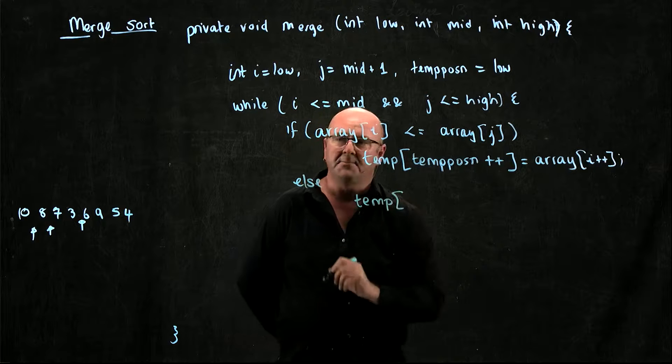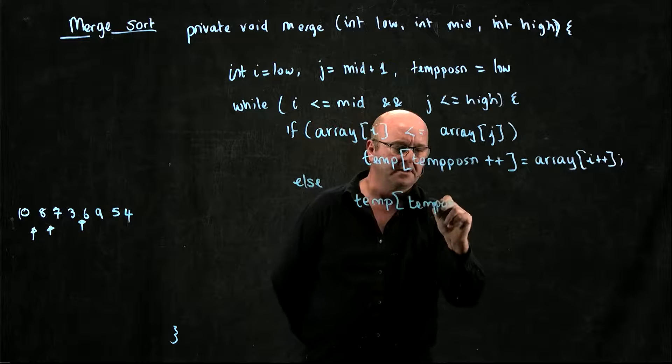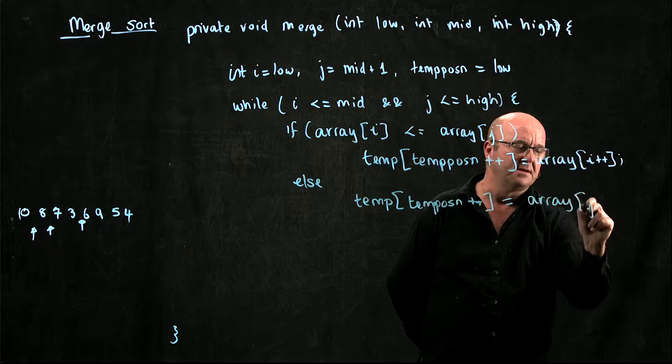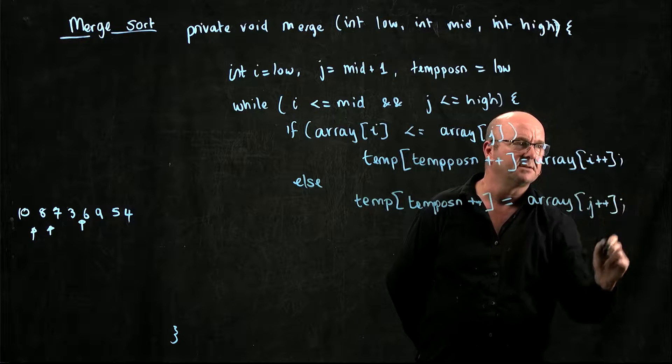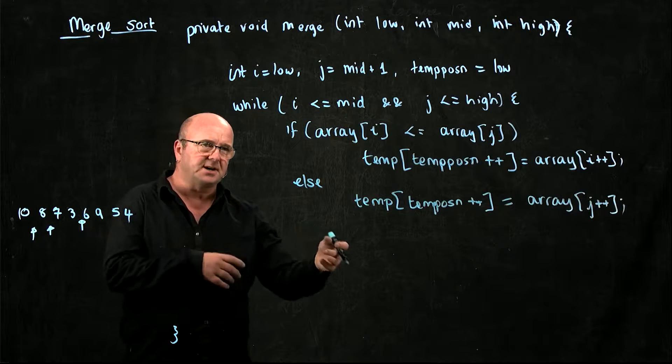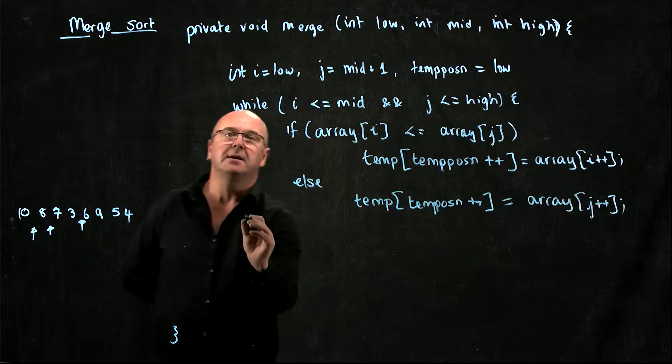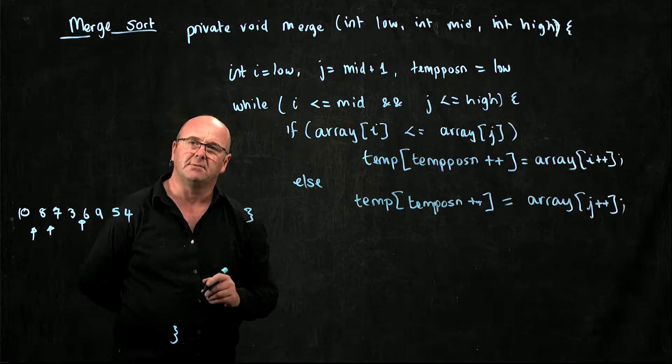the temporary array at temp position equals array[j] plus plus. So we're either taking the element in array at position i, or we're taking the element in array at position j. That's the end of our while loop.